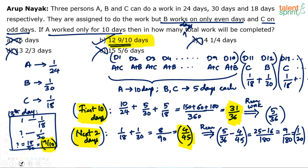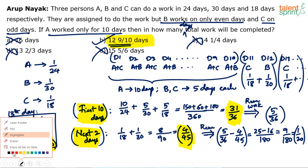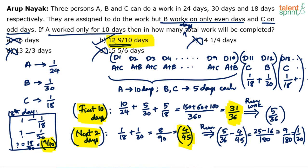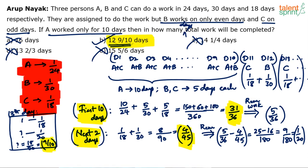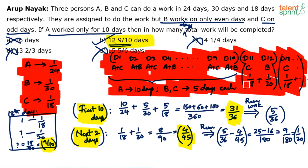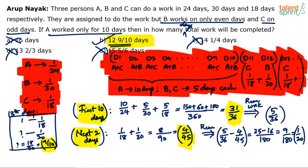For the exam, avoid writing all the preliminary steps — those are just for explanation. Visualize the day pattern mentally without putting pen to paper for it. Only work through the key calculations. If done smartly, you can eliminate options before completing the last step, since the answer clearly falls between 12 and 13.